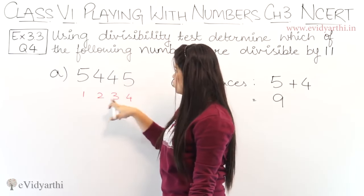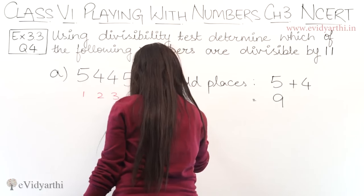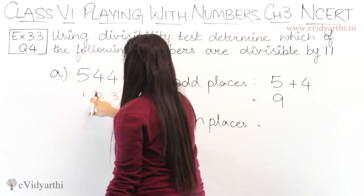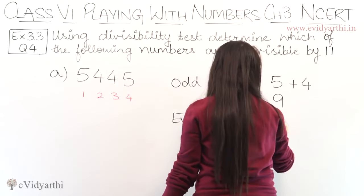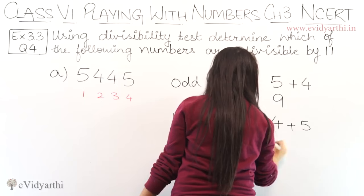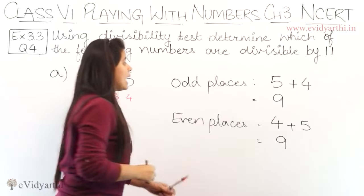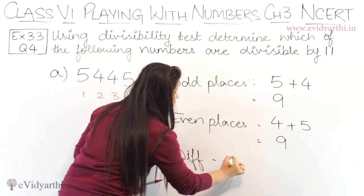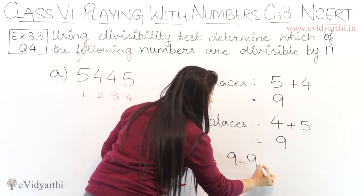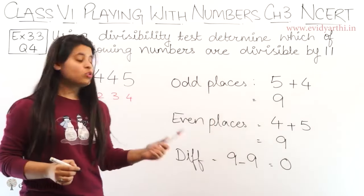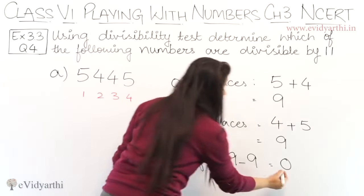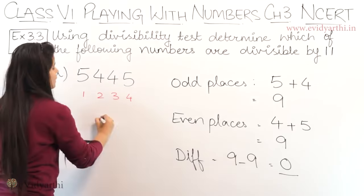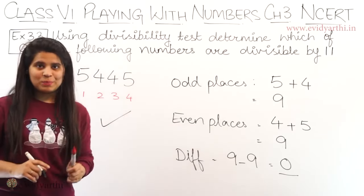Next, even places — that means positions 2 and 4. We add the even place digits: 4 and 5. So, 4 plus 5 is 9 again. Now, we need to take the difference. So, the difference is 9 minus 9, and the difference is 0. If the difference is 0 or 11, it will be a multiple, which means this whole number is divisible by 11.